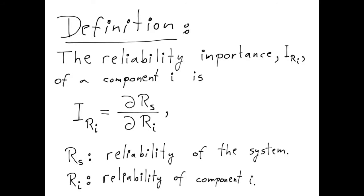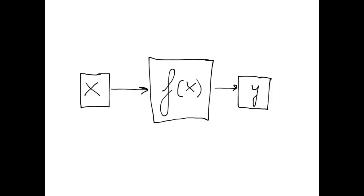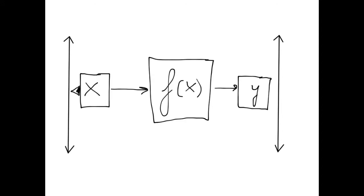To get an intuitive understanding of what this means, let us start with some very basics. A function f(x) can be thought of as a machine that takes an input x, does some processing of that input, and produces an output y. Now imagine we put a scale on each side of the machine — one on the left side and one on the right side — and let the input x point to the left scale and the output y to the right scale. If the function is defined on the real numbers, each of these scales would be the real number line.